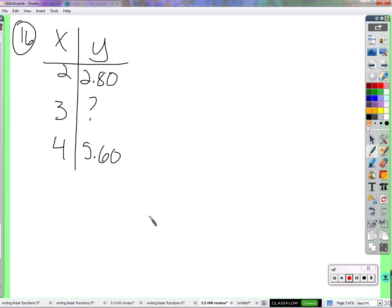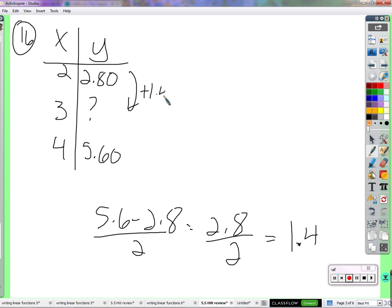Richard? I did $5.60 minus $2.80, and that got me $2.80. And then I added $1.40, because I split $2.80 in half. So we go up by $2.80 while we go up by two pounds. So divide that change in $2.80 by the change of two pounds. We come up with $1.40. And then add that on to $2.80. Add $1.40. Which gives us $4.20.